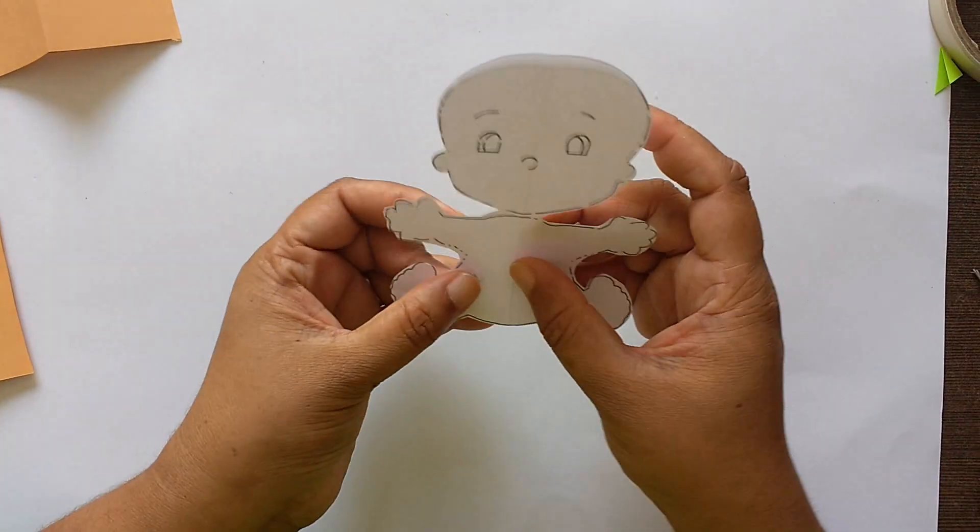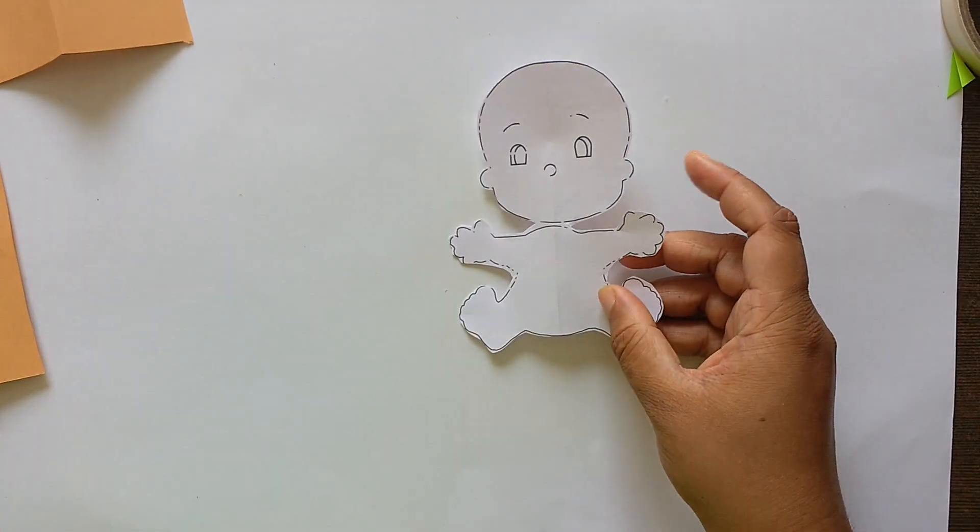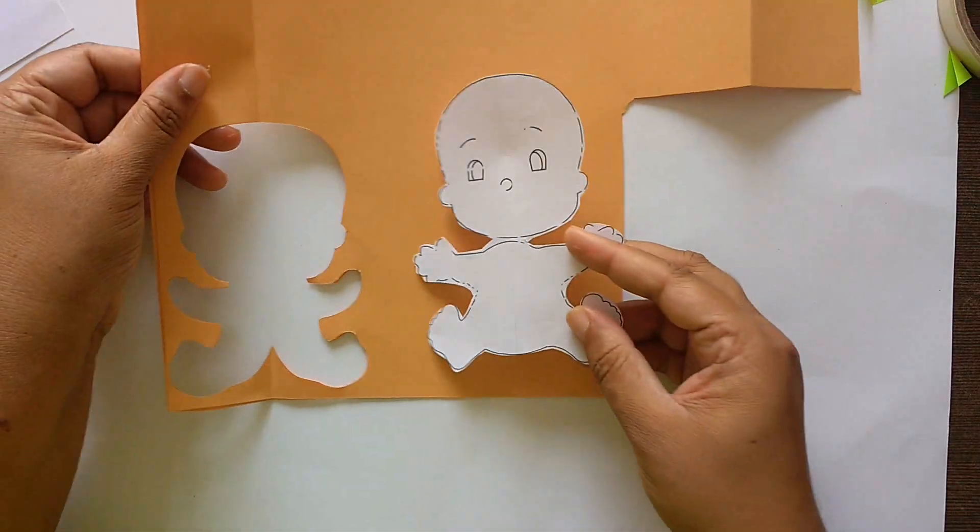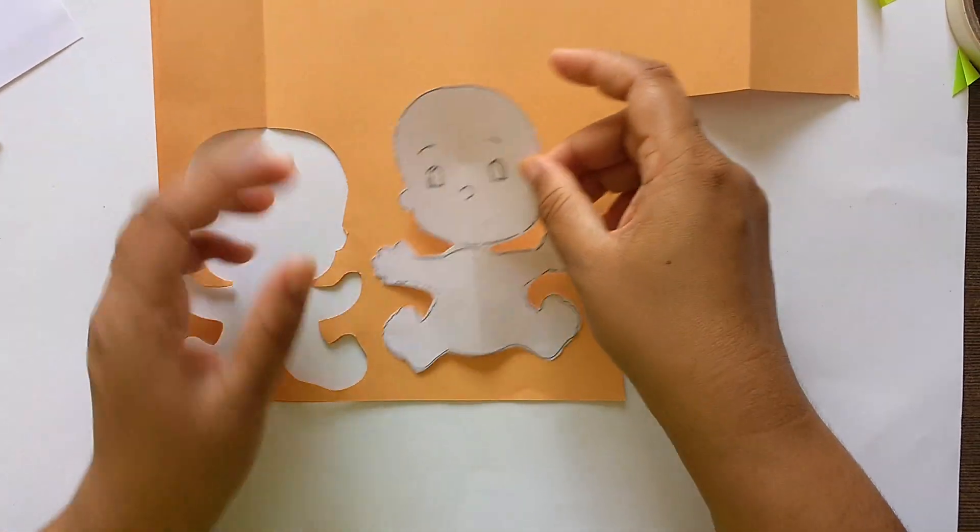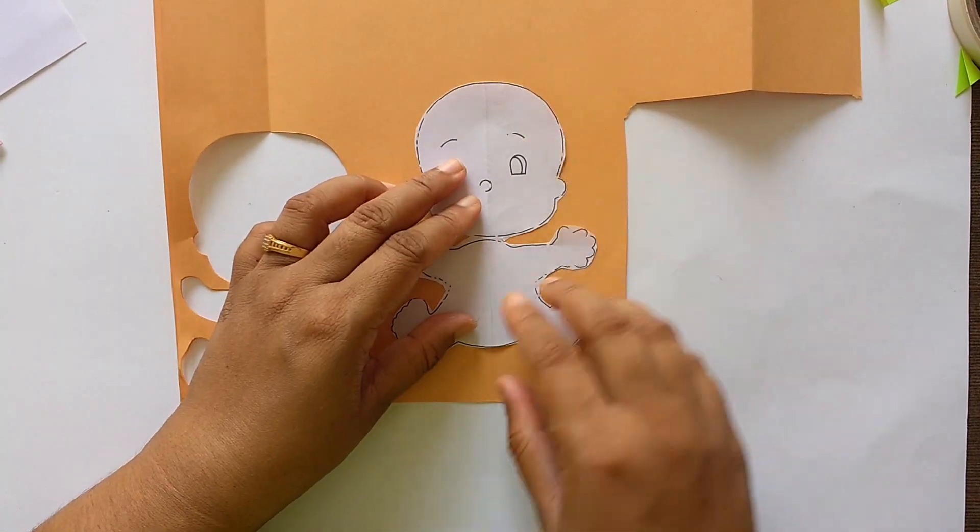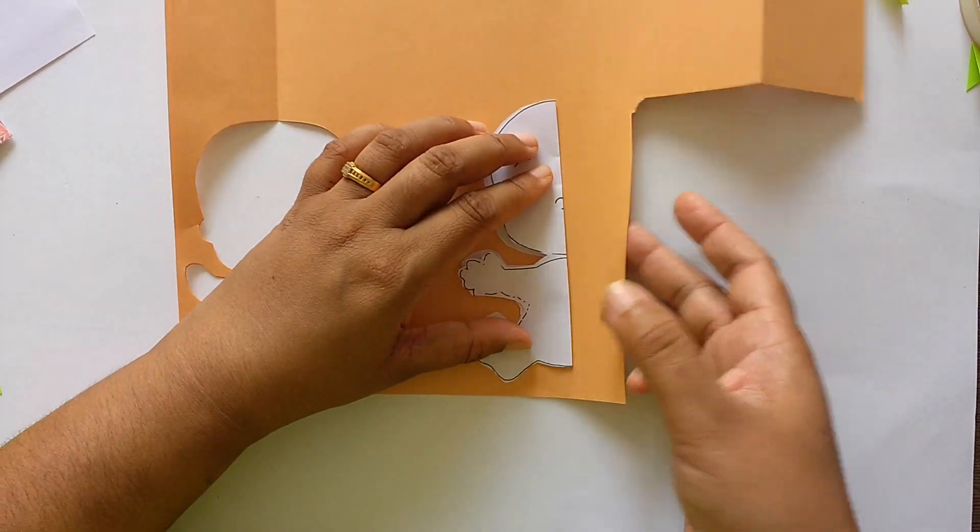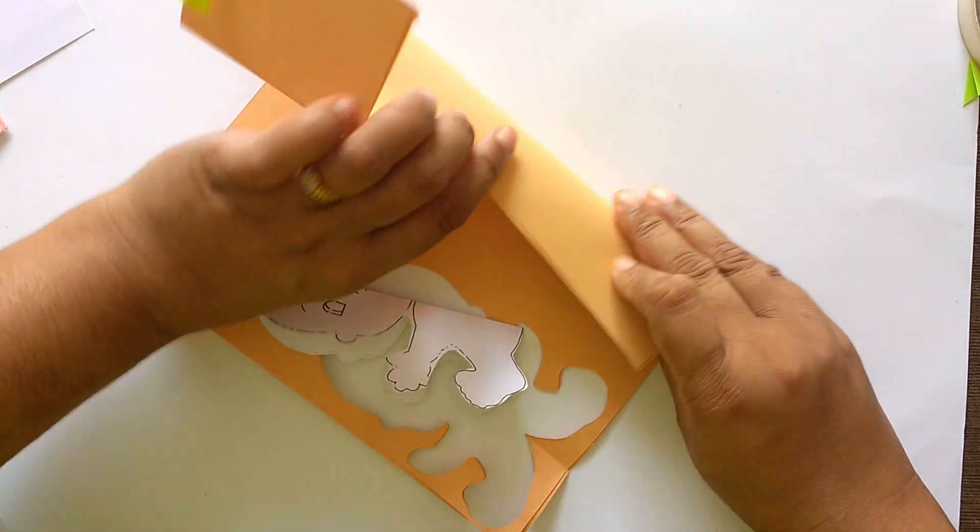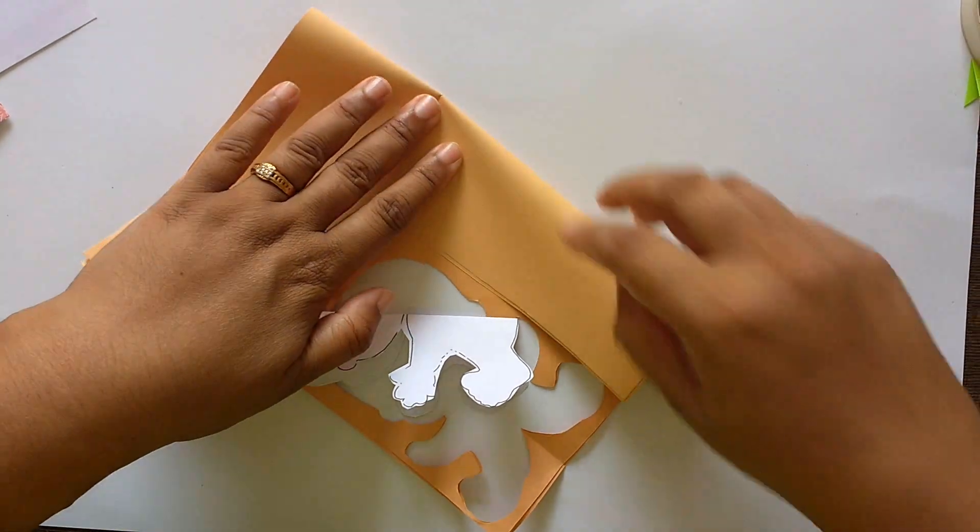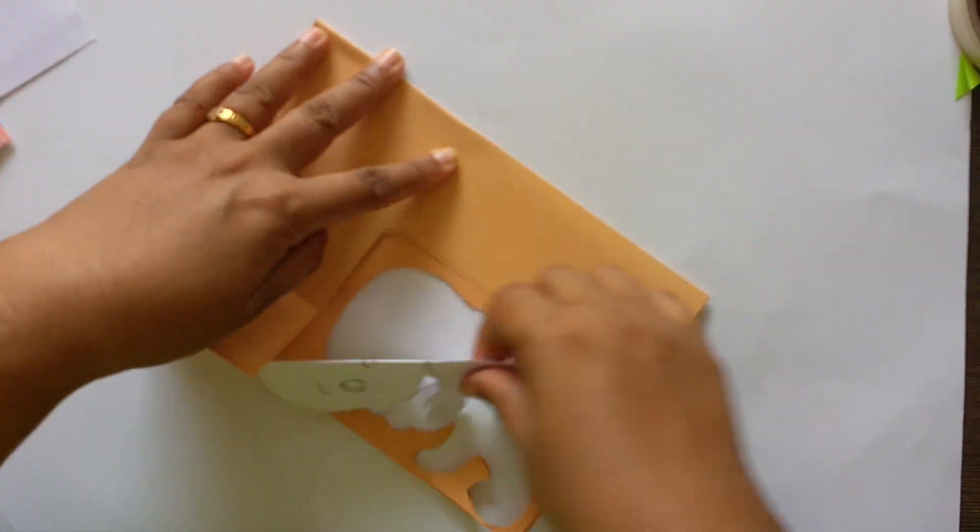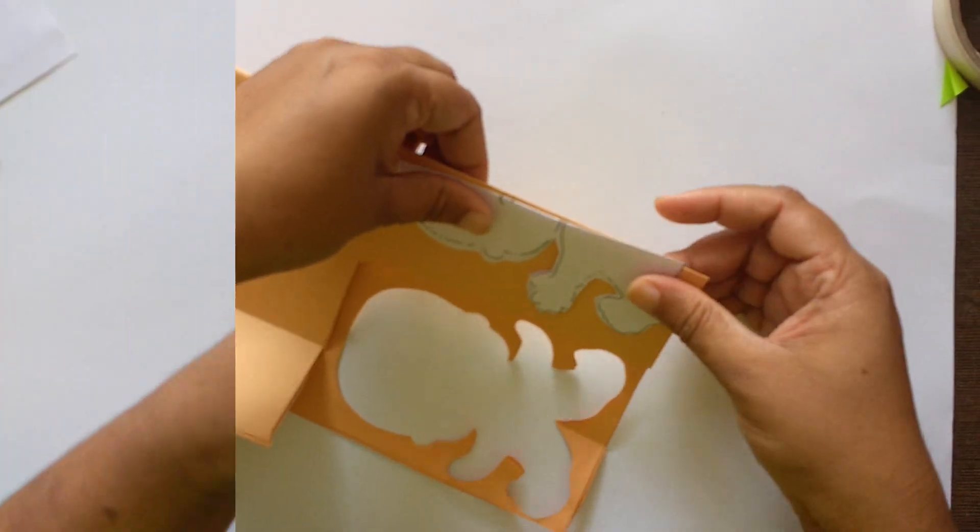Now I have cut the shape of the baby. So first of all we will take a skin color paper and trace it in that. You can fold it like this. This is a symmetrical shape. So fold your paper like this and cut the paper.